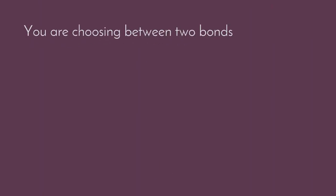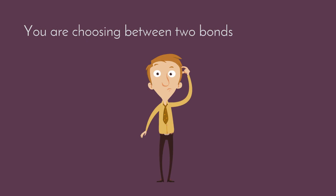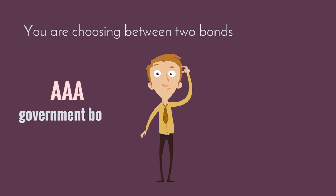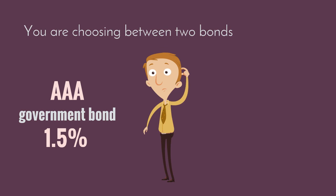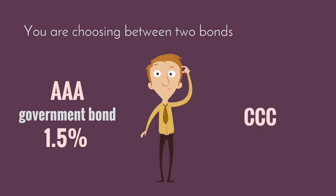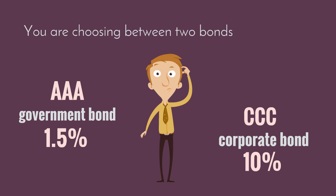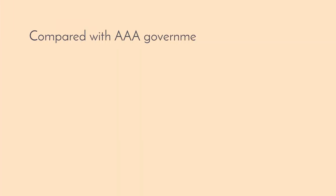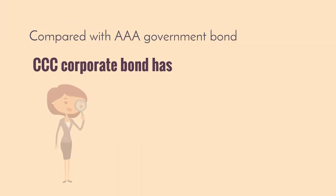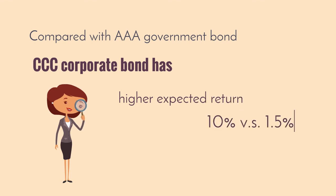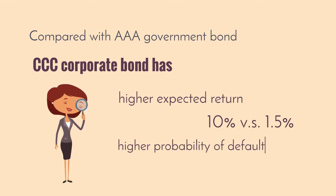For instance, when choosing a bond to invest, you could either select a AAA government bond with an expected return of 1.5% or a CCC corporate bond with an expected return of 10%. Compared with the AAA government bond, the CCC corporate bond has a more attractive expected return. However, it also has a higher probability of default.